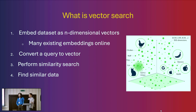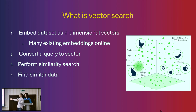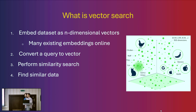So what is vector search? A vector is a collection of floating point numbers that represent some abstract quality of some object, and they live in vector space. Things that are more related to each other live close together in vector space; things that are unrelated live further apart. Distance can be measured a few ways: cosine similarity, dot product similarity, and Euclidean similarity — all different ways of measuring distance between vectors that let you find similar data when querying in vector space.